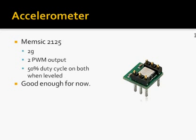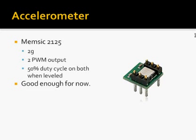The accelerometer we're using is an off-the-shelf unit from Radio Shack, used in a lot of hobby applications. For our current goal of just getting the helicopter to go up, hover stably, and come back down, this is good enough. When we move into directional movement, we would also need a gyroscope. It works basically as a level — when flat it gives a 50% duty cycle on both the X and Y outputs, and when tilted it gives something like 51 or 49 depending on the direction.